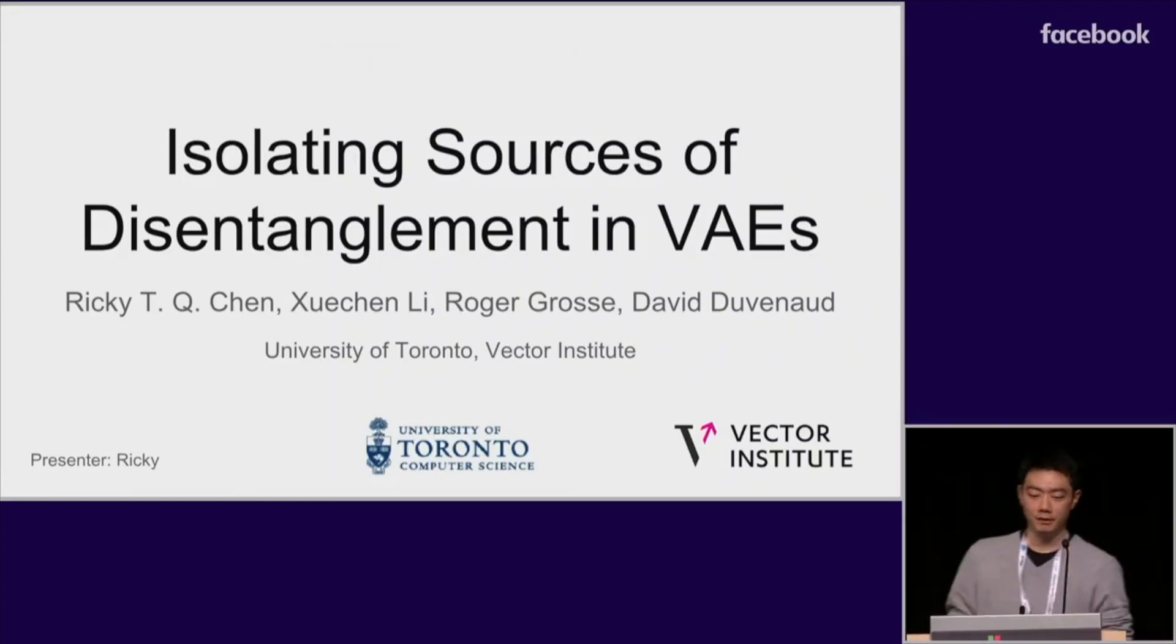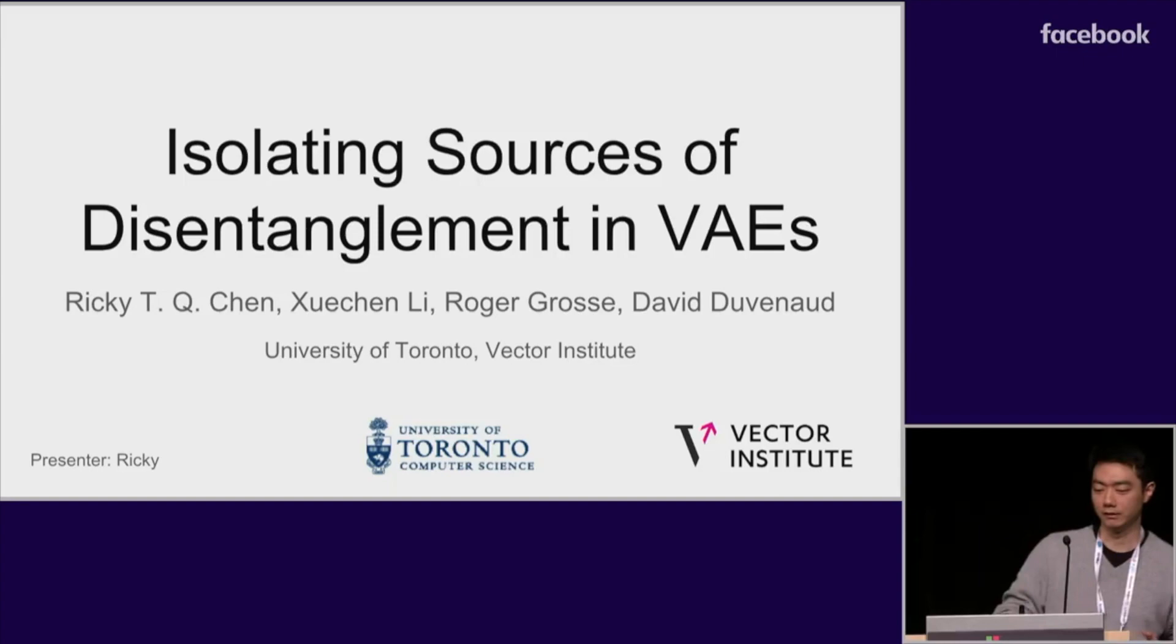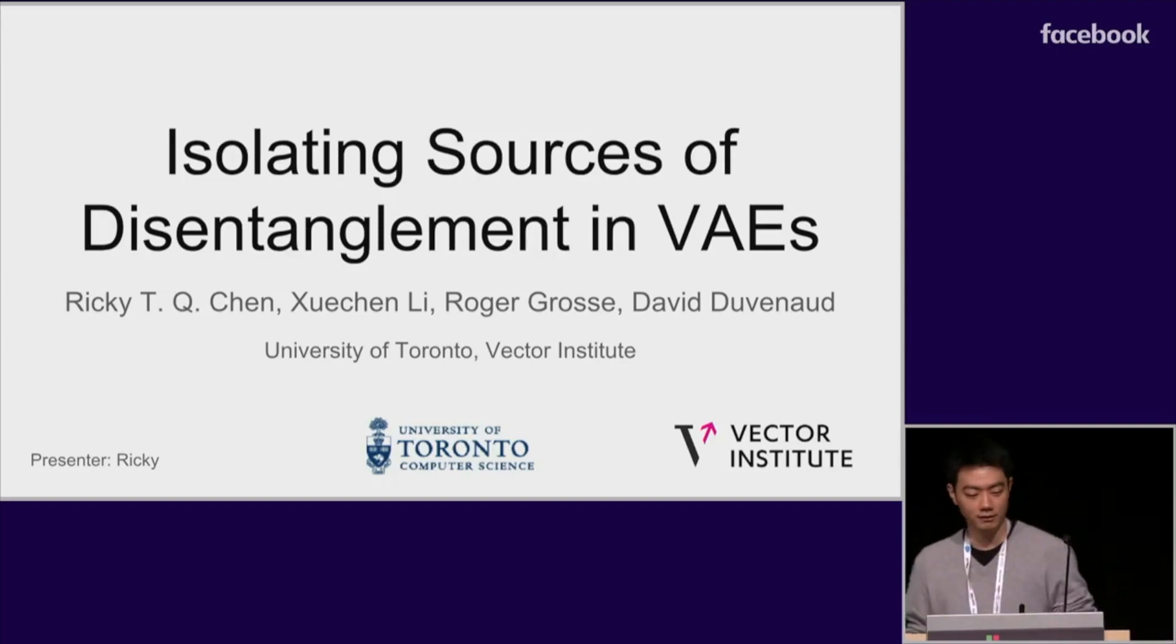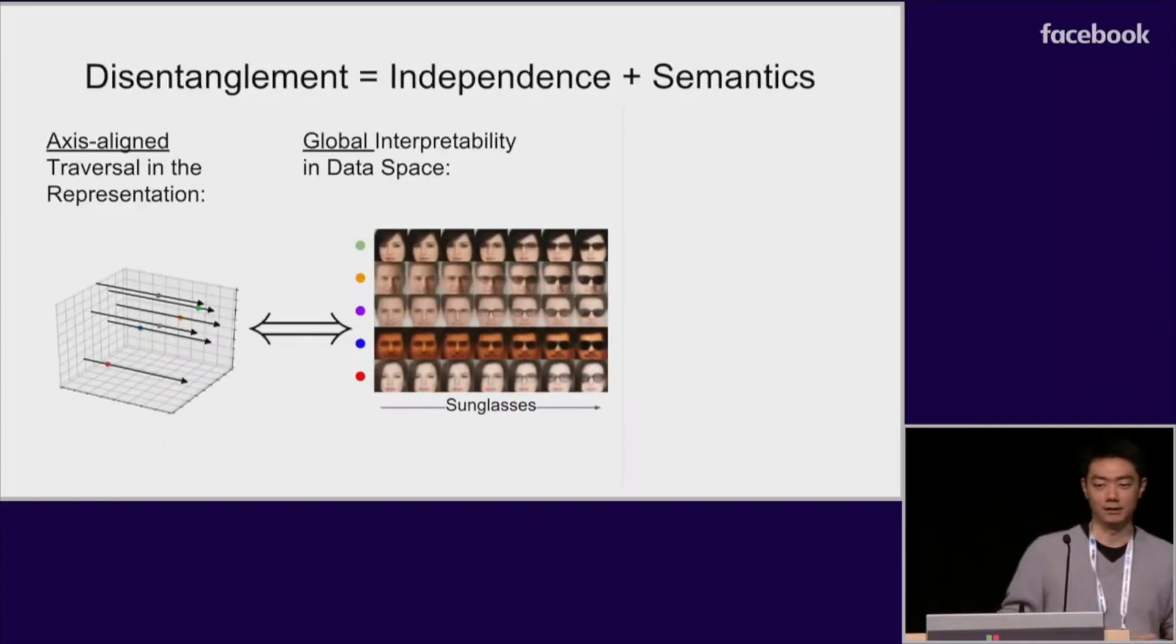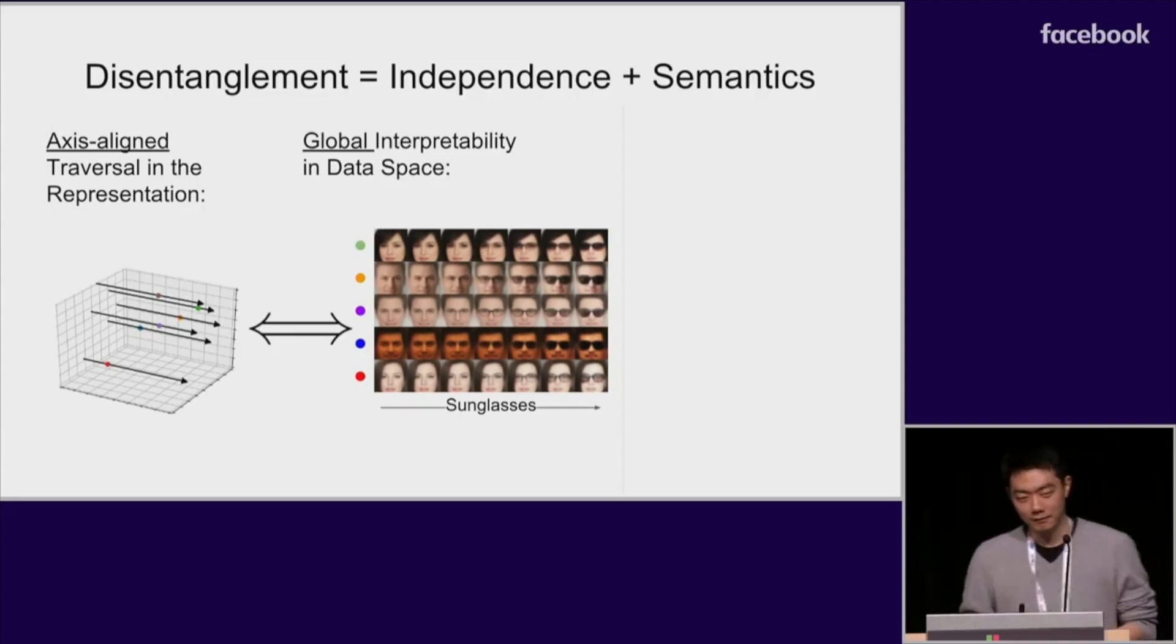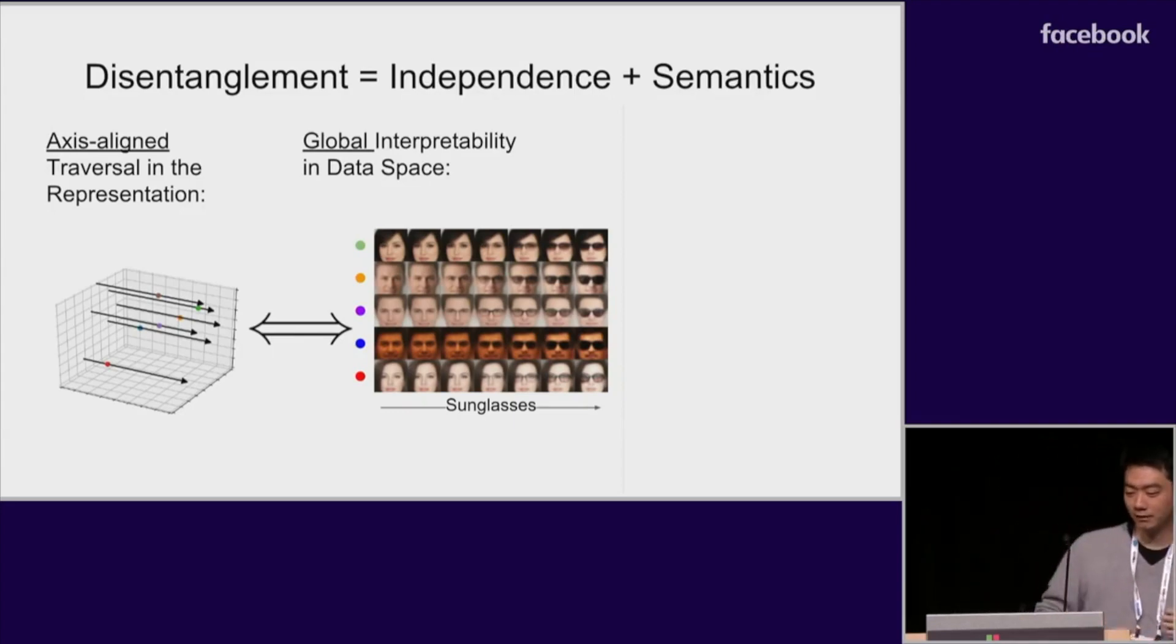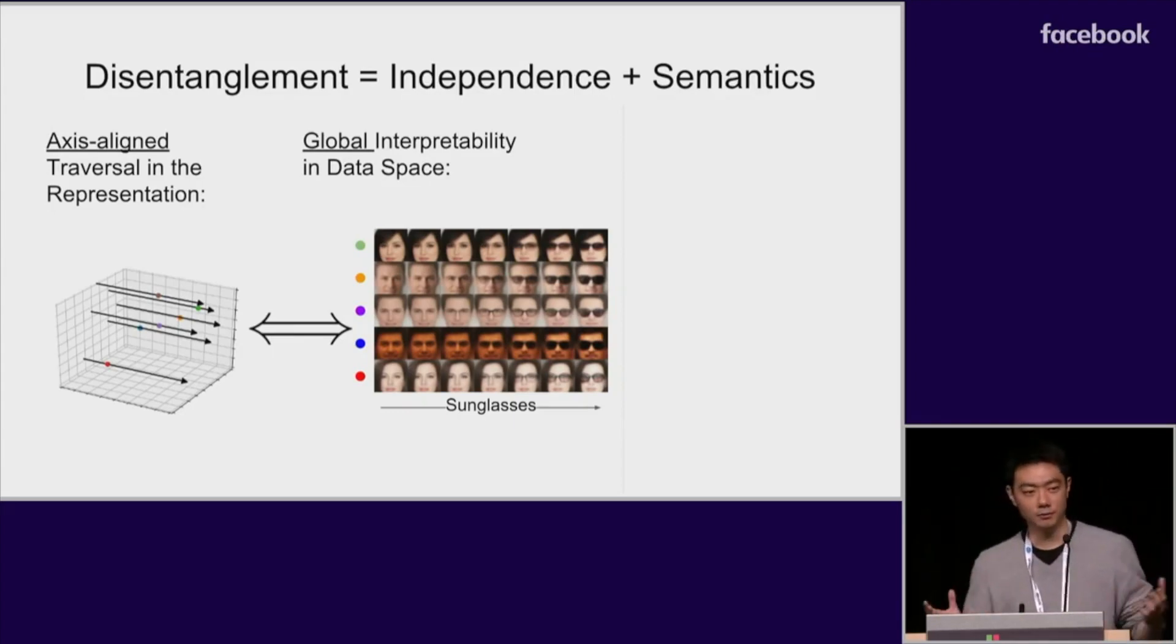Hello, I'm Ricky. I'm here to talk about how variational autoencoders regularize their representations and how we can use this to obtain so-called disentangled representations. So let's start by talking about the term disentanglement. The definition of this term is quite up to debate and isn't well defined in general.